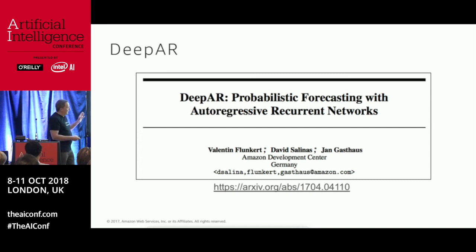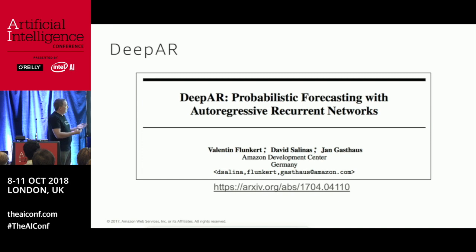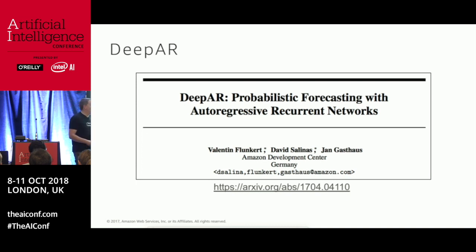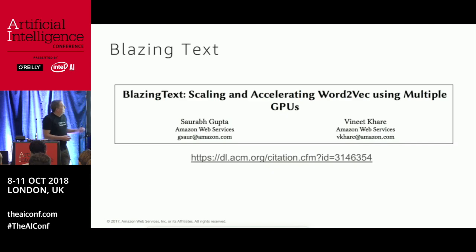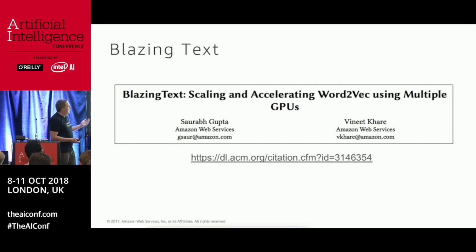DeepAR has been published — it was designed by our machine learning development center in Germany. You can grab that research paper; I warn you it is very dense, but it's a fascinating algorithm. There's no time today to go into why DeepAR is better than typical RNN approaches for time series, but read the paper and you'll get the good stuff. BlazingText has also been published, with an extensive blog post on our machine learning blog comparing its performance with FastText and other implementations.